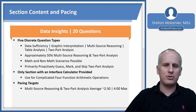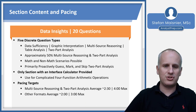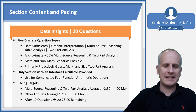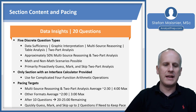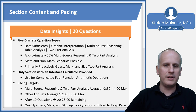For pacing in Data Insight: Multi-Source Reasoning and Two-Part Analysis questions average about two and a half minutes per question with a hard four-minute max. The other formats — Data Sufficiency, Graphics Interpretation, and Table Analysis — average about two minutes with a hard three-minute maximum. After 10 Data Insight questions, you should have between 20 and 25 minutes remaining, though this is a flexible goal depending on when you see the longer question types. You can quickly guess, mark, and skip up to two questions to keep pace, leaving at least one return option toward the end, knowing you can only change three answers total.